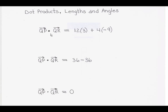Vector QP dotted with vector QR is equal to 12 times 3 plus 4 times negative 9. The x-components multiply and the y-components multiply. Please remember that dot products represent scalar quantities, meaning they do not have a direction — a scalar is just a number without direction. So vector QP dotted with vector QR is equal to 36 minus 36, which equals zero.